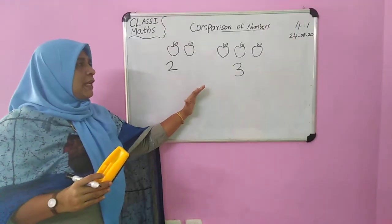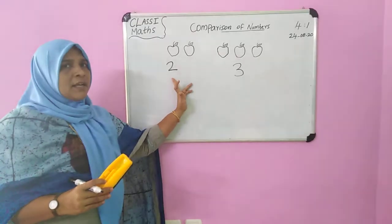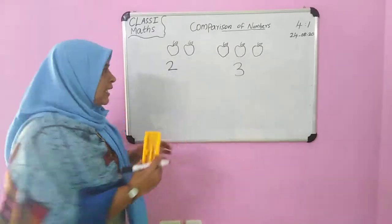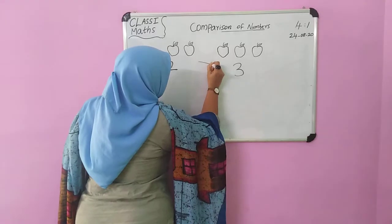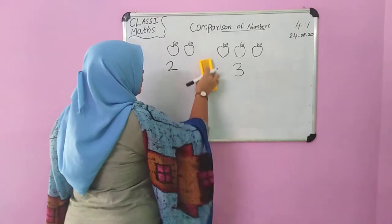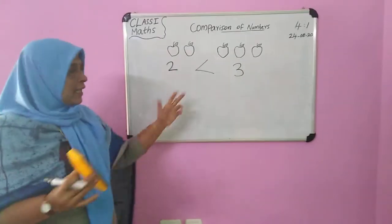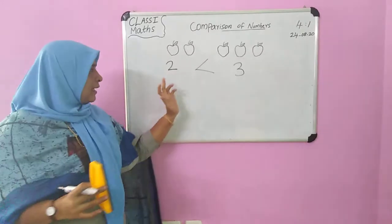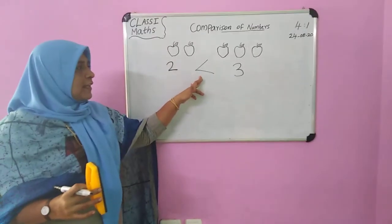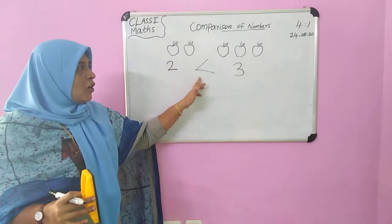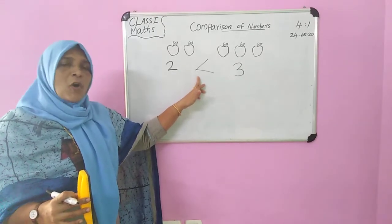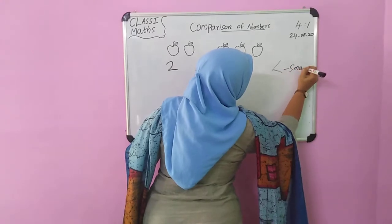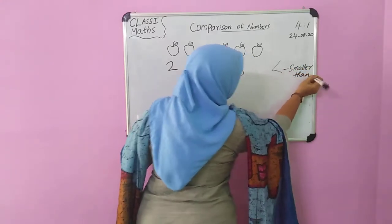Which symbol do we denote here? Two is less than three, or two is smaller than three. This symbol is put here — this symbol denotes smaller than. Two is smaller than three. Is it clear, children? We denote this symbol to mean smaller than.